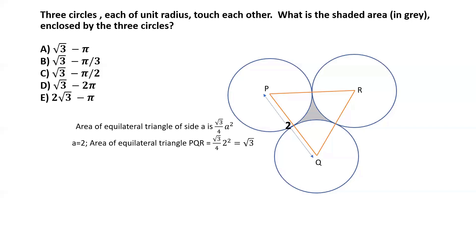So this doesn't immediately give us the area that we're looking for, but at least it gives us a start because now we know the area of the triangle. If we can find the area of the sectors, the circular sectors, we can probably find the area of the shaded portion by subtracting the area of the sectors from the area of the triangle.